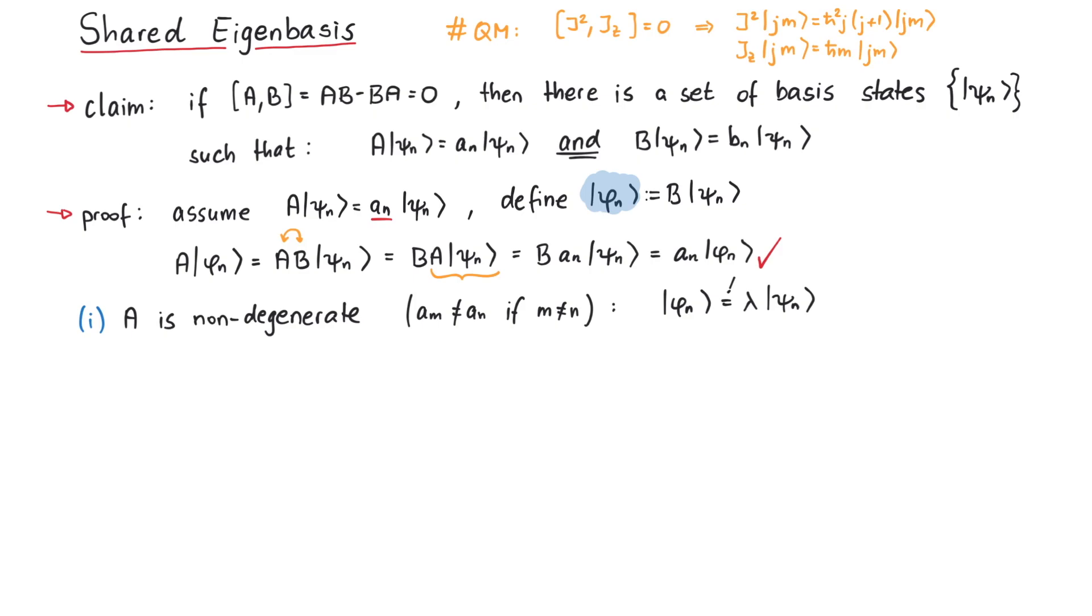Therefore, phi_n can be written as some constant lambda times psi_n. But phi_n is just an abbreviation for B psi_n, so this looks like an eigenvalue equation. Therefore, the functions psi_n are eigenfunctions of B.